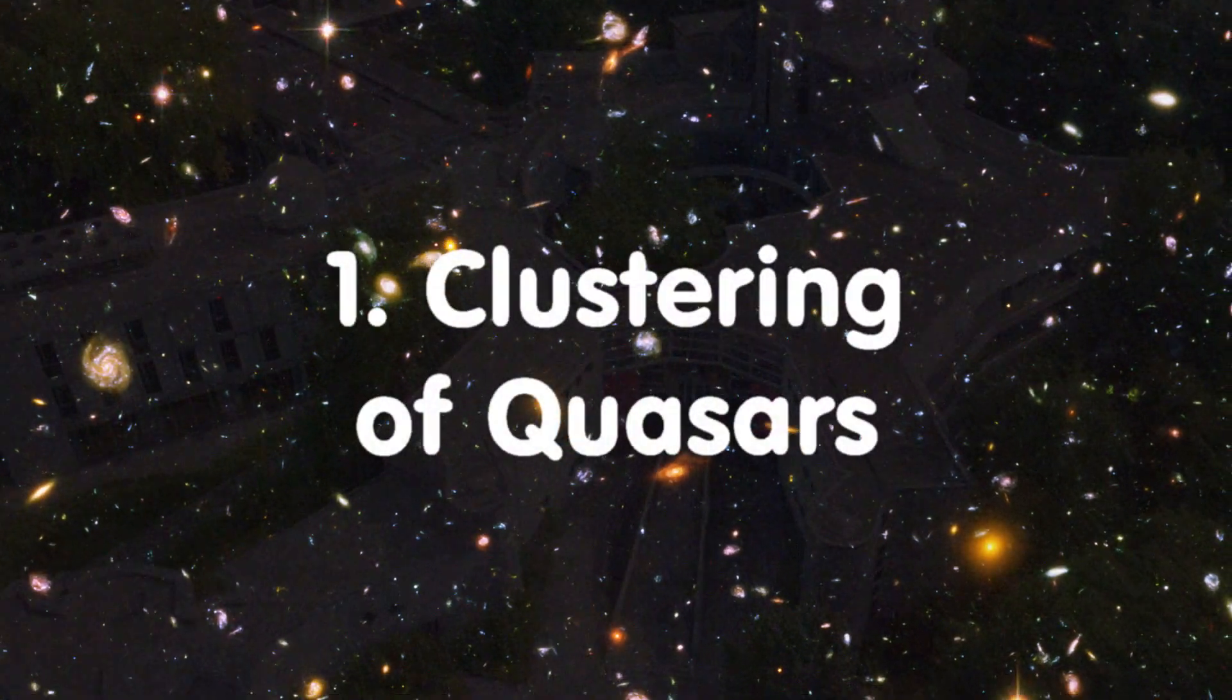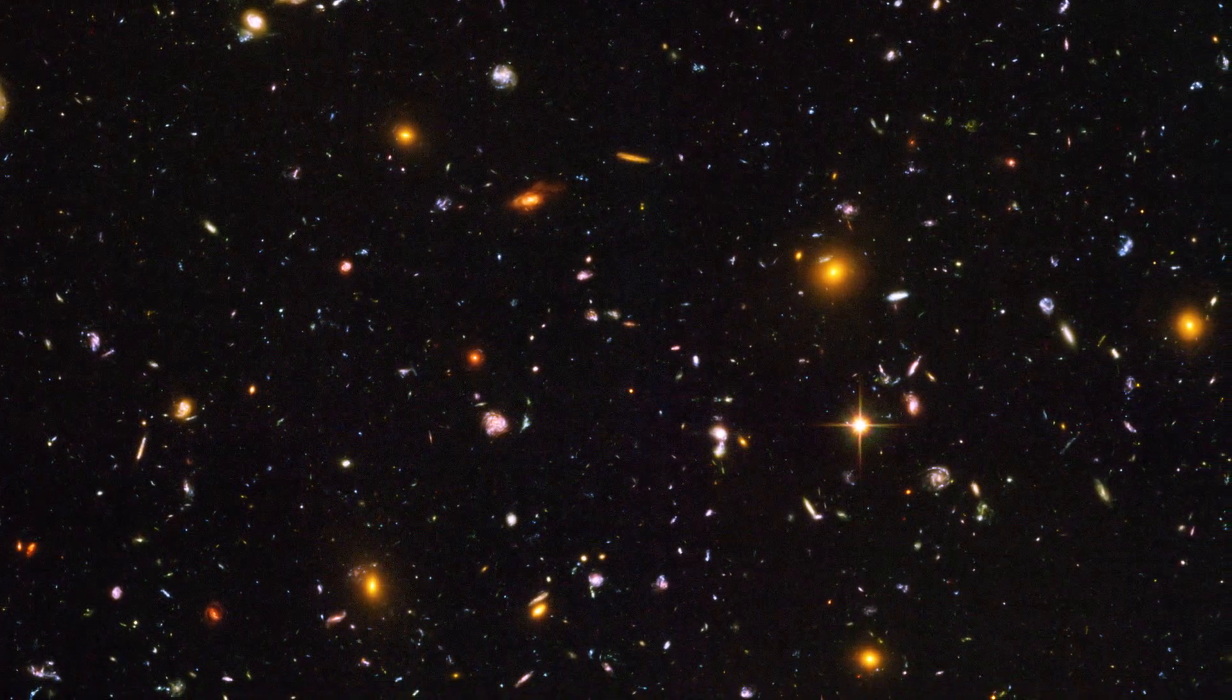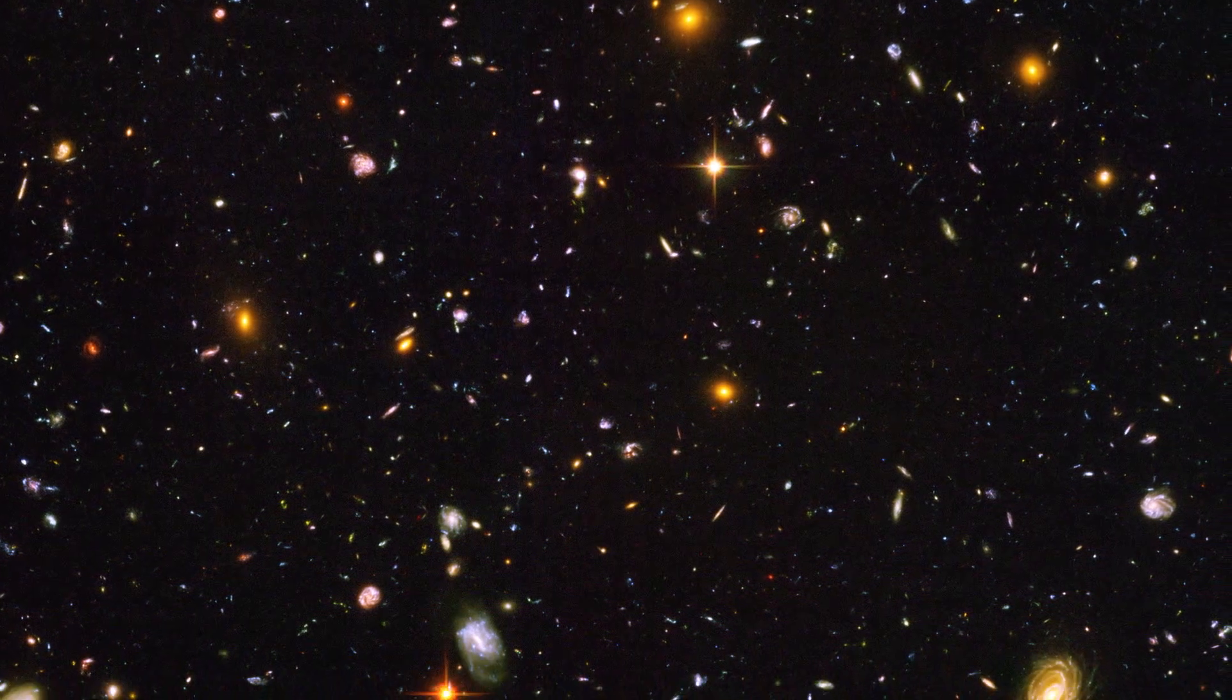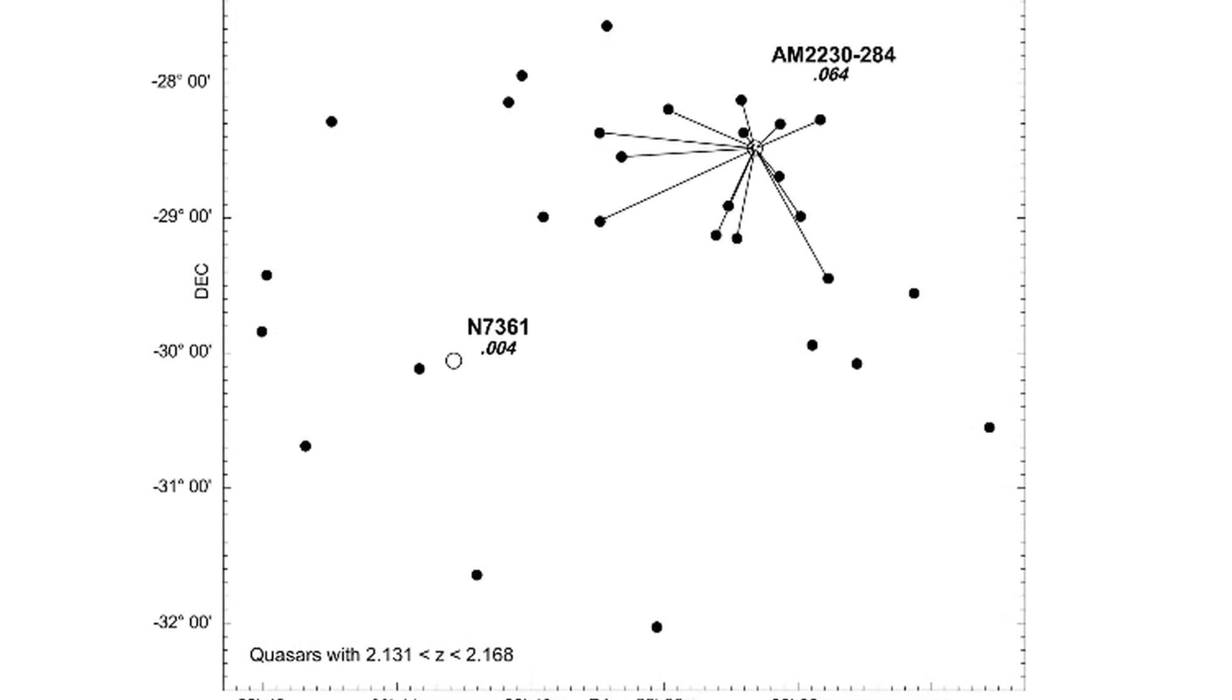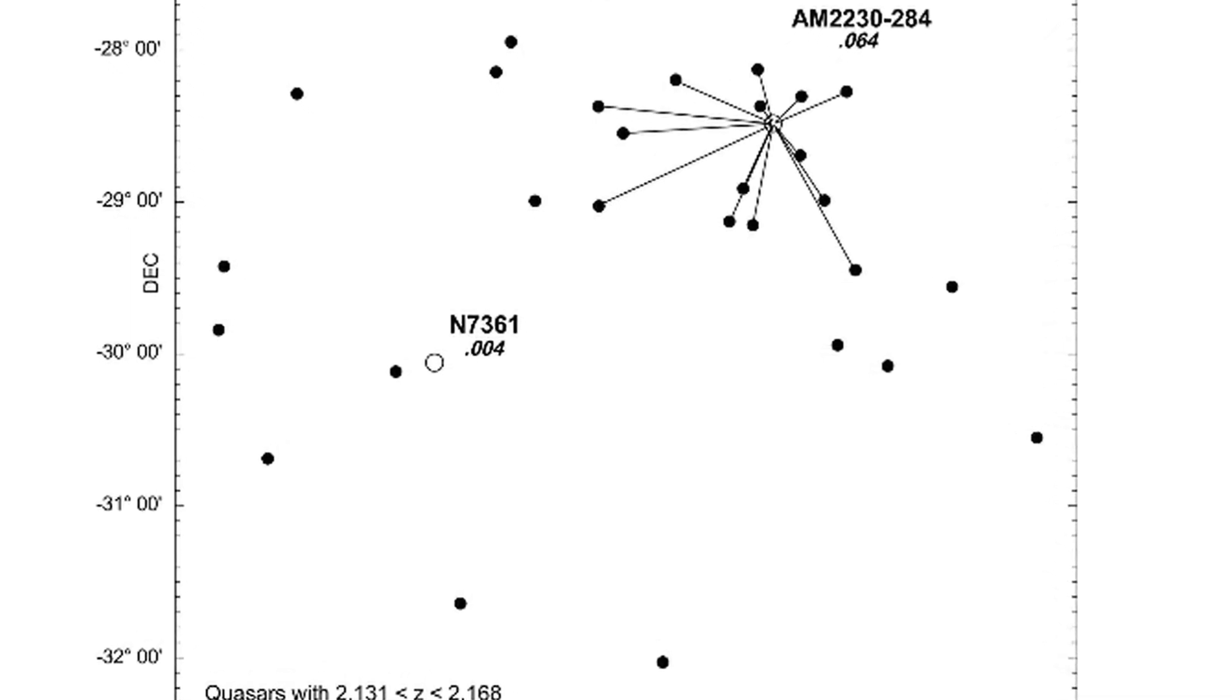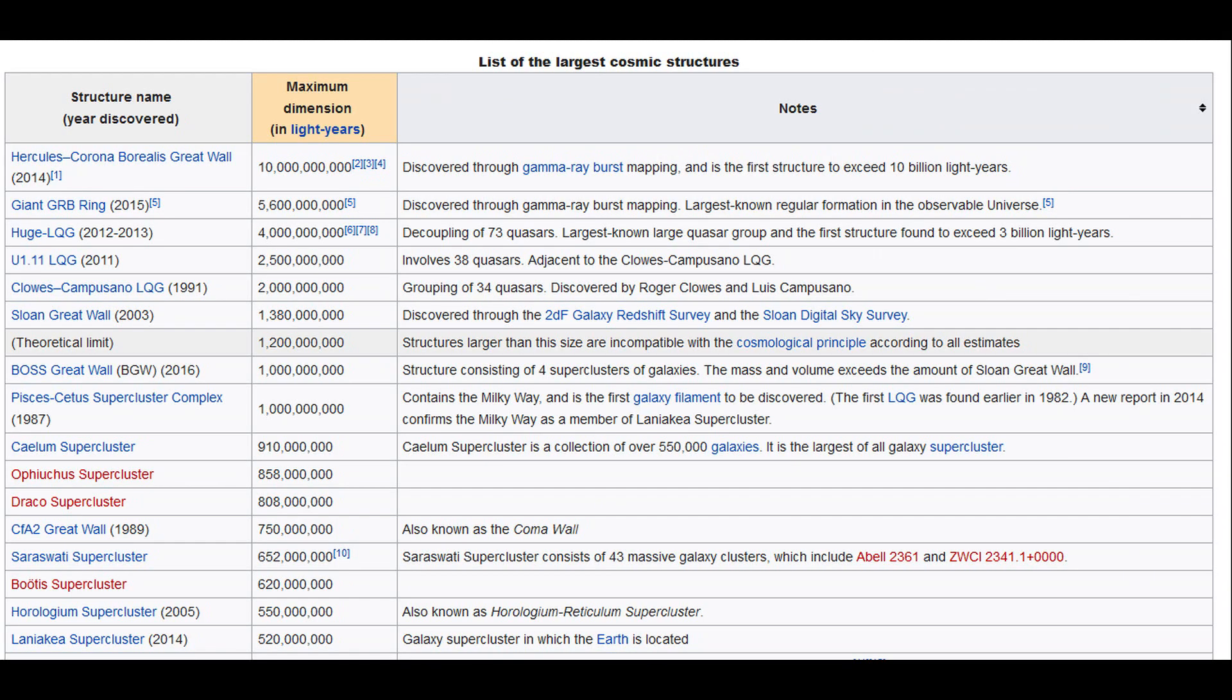The first example is clustering of quasars. There are many examples of quasars being discovered in groups with similar redshifts. One extreme example which Halton Arp discussed in one of his papers: during an analysis of the 2dF deep field image, there are 21 quasars, 14 of which are clustered about a galaxy AM 2230-284. If we assume that redshift correlates to distance, then this cluster would occupy a distance of 249 megaparsecs. In comparison, the Virgo cluster occupies just 30 megaparsecs. A quick search of the larger structures in the universe yields more examples of quasar clusters which are all above the maximum theoretical size possible given the age of our universe.